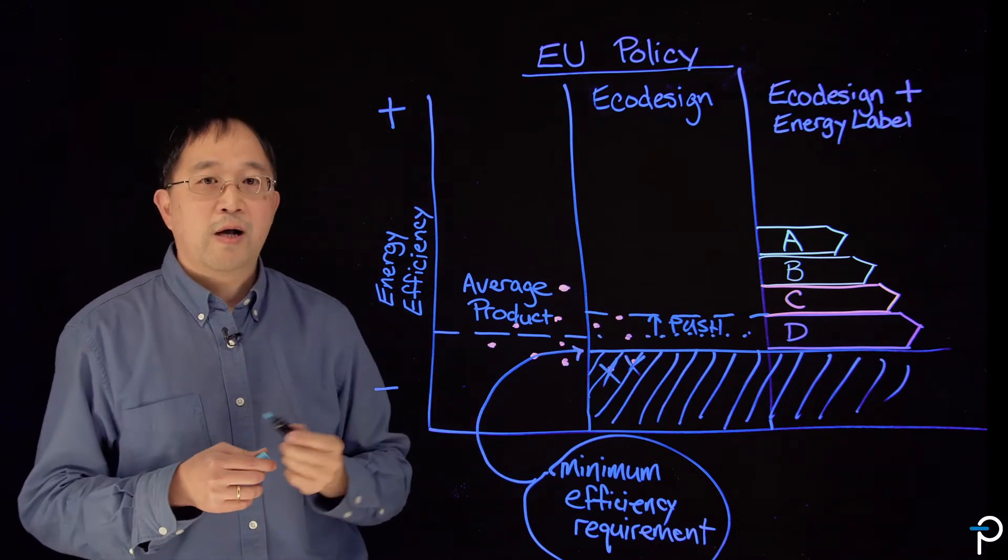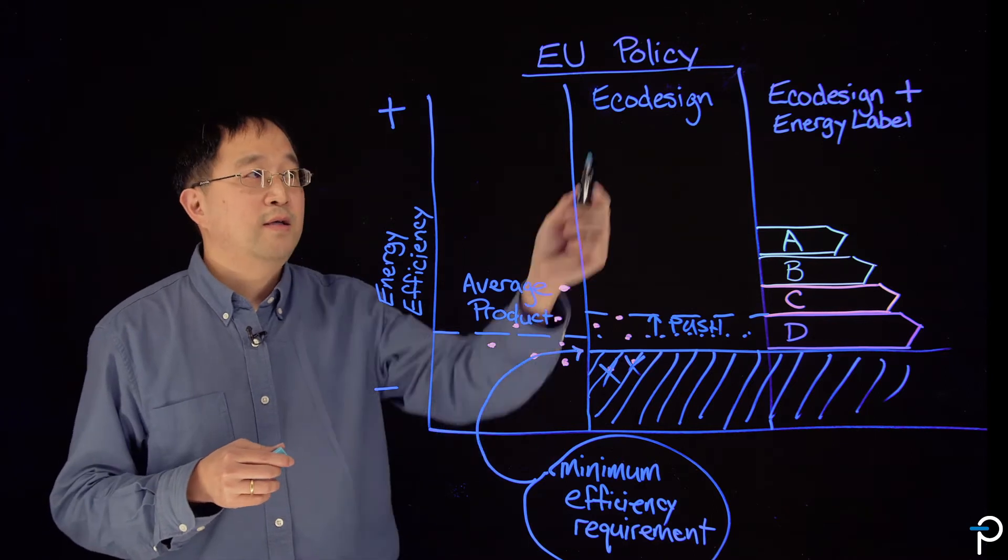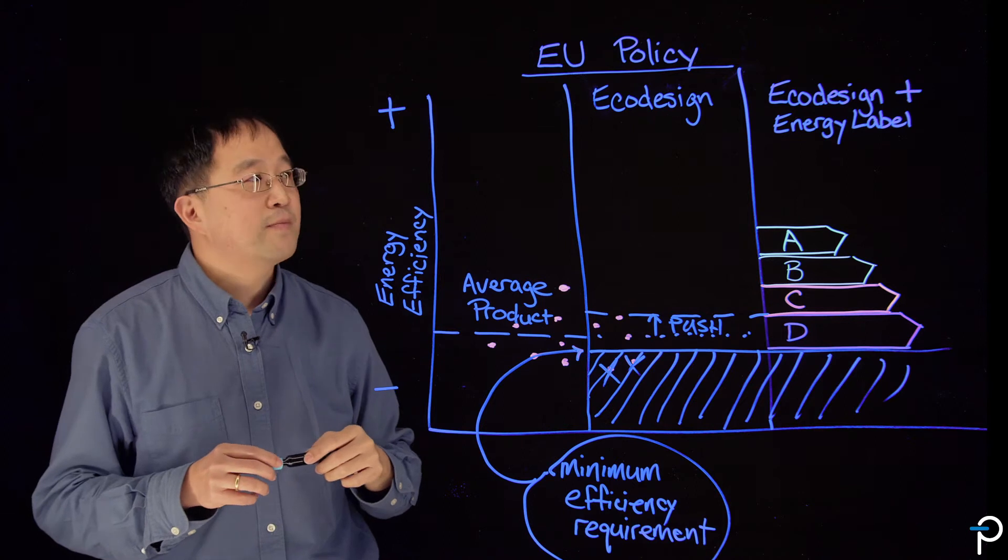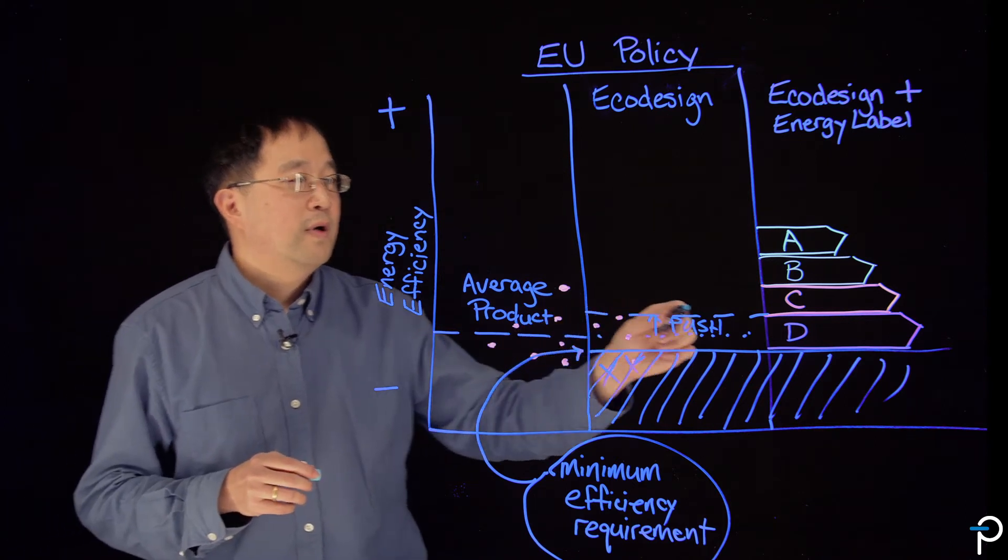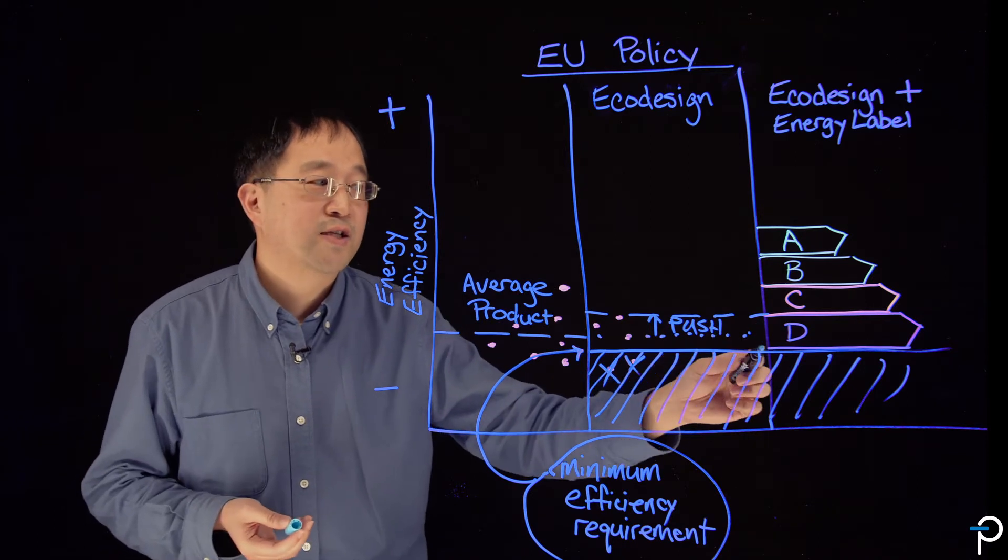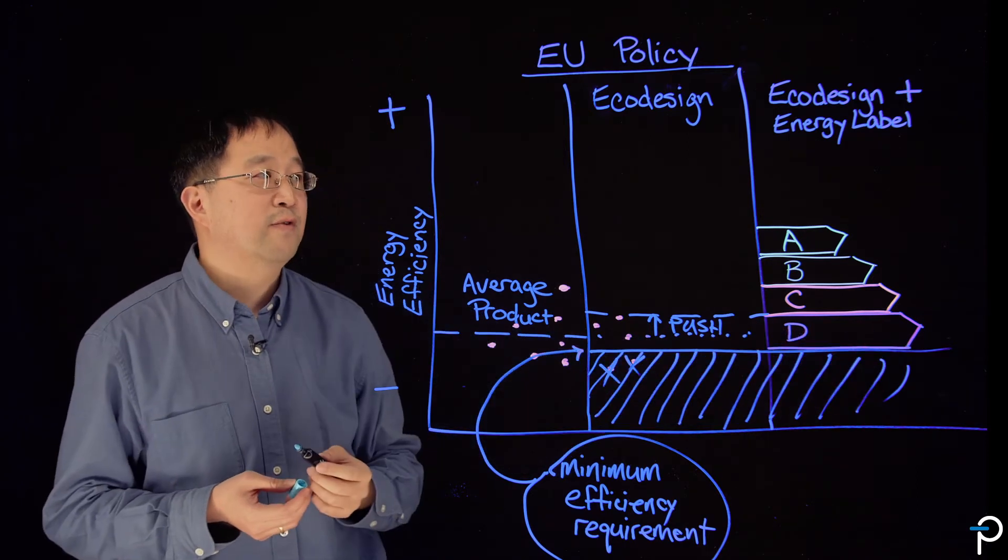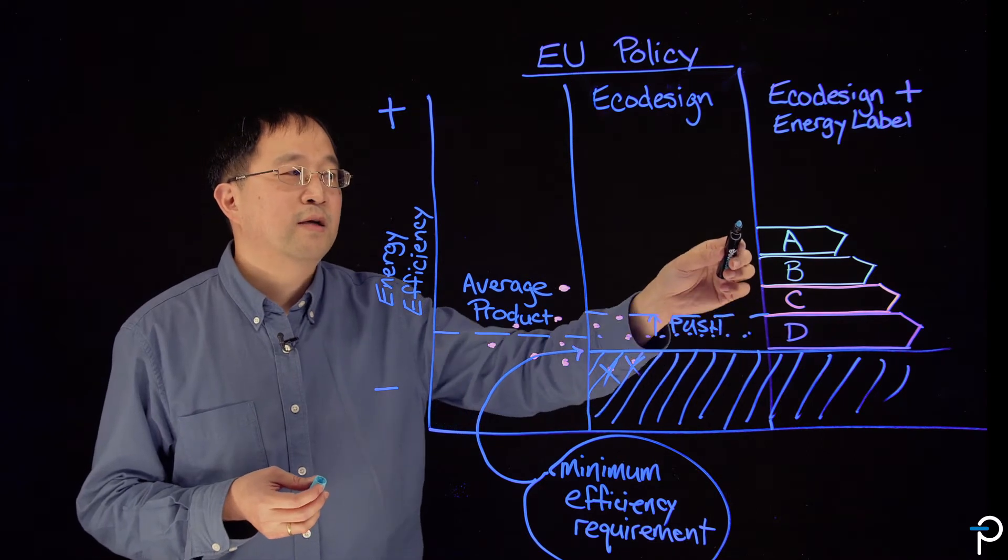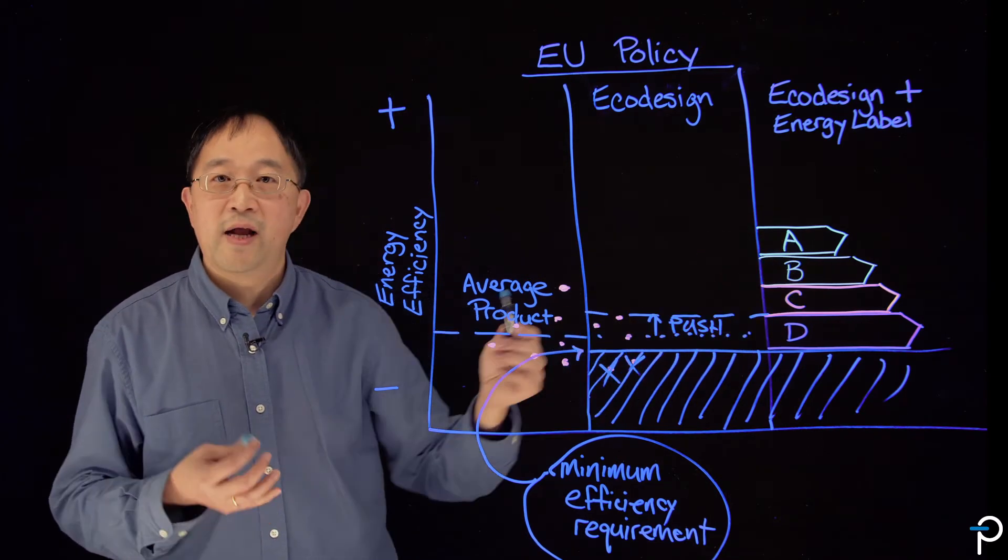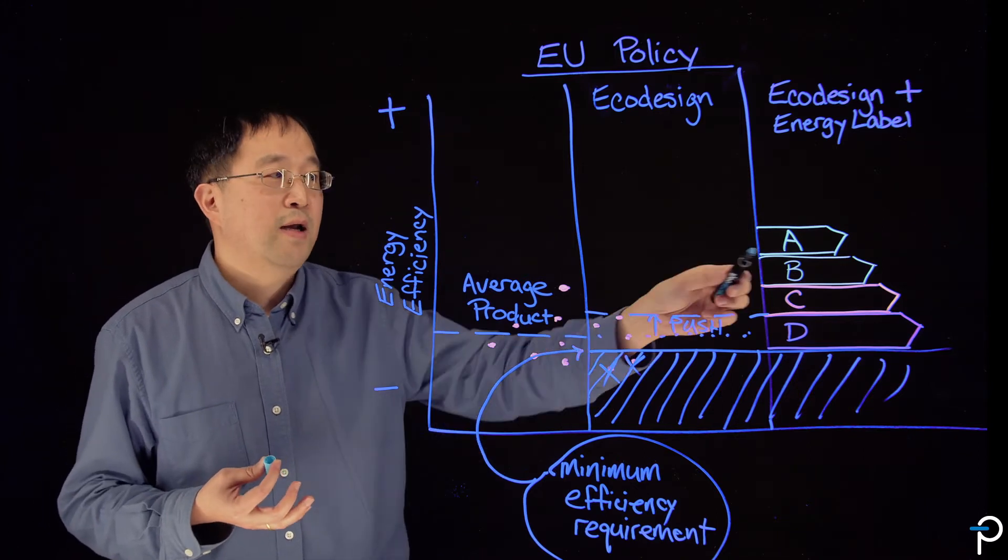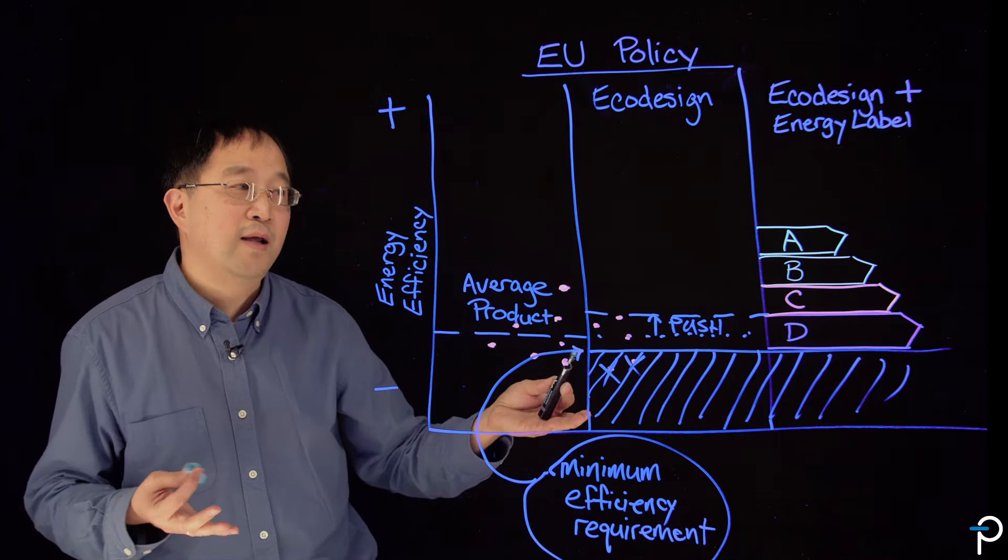The next policy instrument beyond the Eco Design Directive used in Europe is the energy label. So you can see that the Eco Design Regulation is still in effect, so it still sets the minimum performance level. But on top of it, we now have a label and consumers can see for any given product how well that product is performing. An A grade, of course, is the best, and who wouldn't want an A?